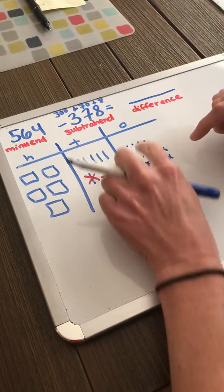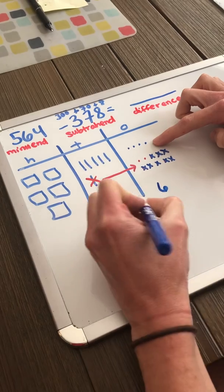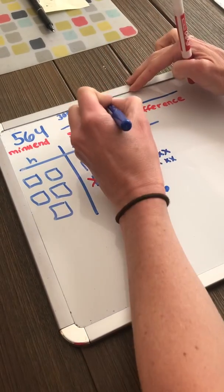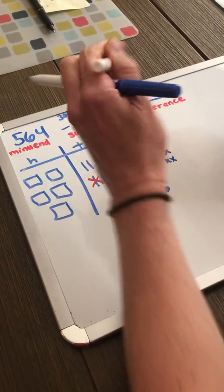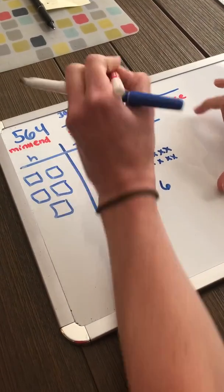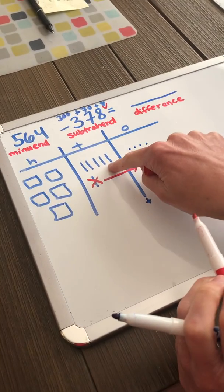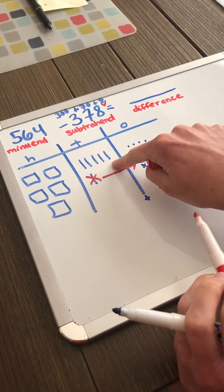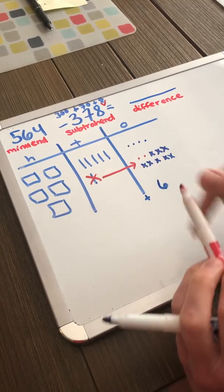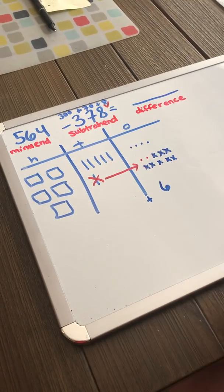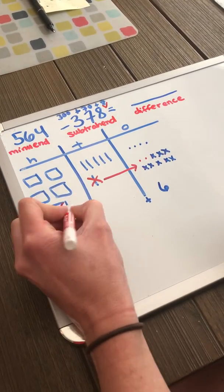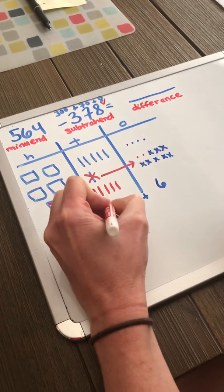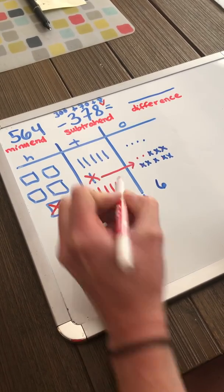After removing 8 ones, I am left with 6 ones. Now I must take away 7 tens, or 70. But I only have 50. I can't take away 7 tens if I only have 5 tens.